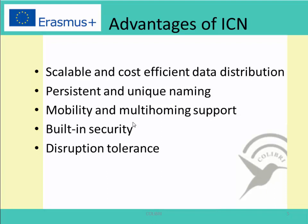The fourth advantage is built-in security. Current network security protects the communication channel between client and server, requiring the client to trust the server to deliver correct information. The ICN security model, in contrast, provides name-data integrity and origin verification of the data object independent of the intermediate source — something not provided by the current network. Last but not least, ICN is also tolerant to disruption. In ICN, a data object is cached on its way to users, so multiple sources across the network can provide the same content, making the network more reliable than the current network.